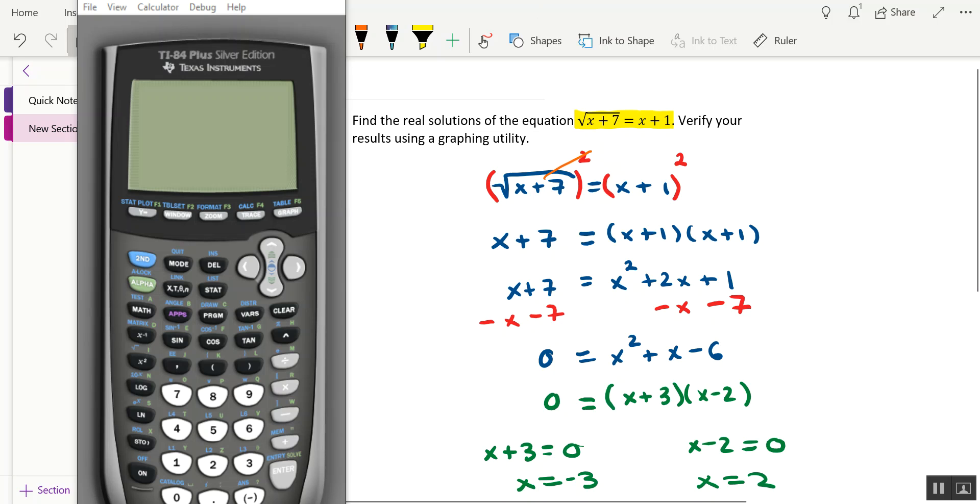So I have my graphing calculator up here, and let's go ahead and fire it up, hit the on button, and hit y equals. With the way that the original equation is written, we've got square root of x plus 7 equals x plus 1, so I would recommend using the intersect feature.